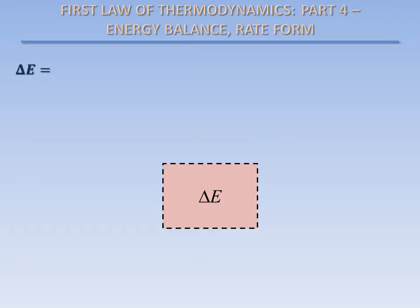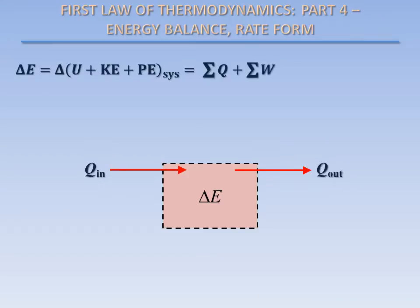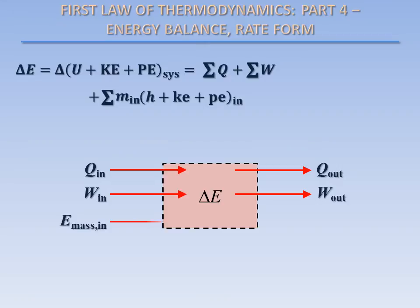The change in the total energy contained in the system, which is equal to the change in the sum of the internal energy, the kinetic energy, and the potential energy of the system, is equal to the sum of all of the energy transferred by heat into and out of the system, plus the sum of all of the energy transferred by work into and out of the system, plus the sum of all of the energy transferred into the system by mass flow, minus the sum of all of the energy transferred out of the system by mass flow.